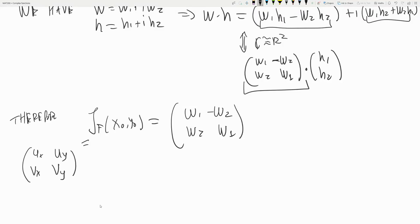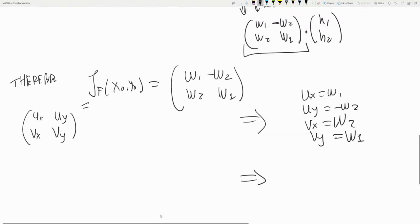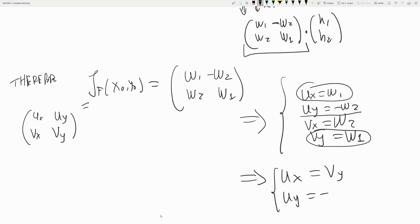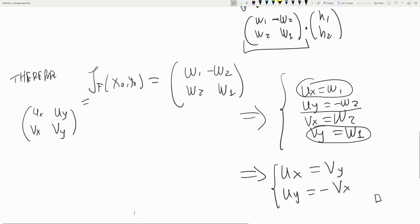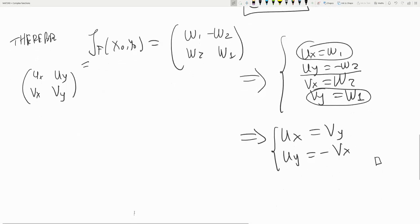So we get the following: ux is w1, uy is minus w2, I'm equating, and vx is w2, and vy is w1. And that's it. So then that gives you ux equals vy, and uy equals minus vx. So that's one heuristic proof of the theorem.